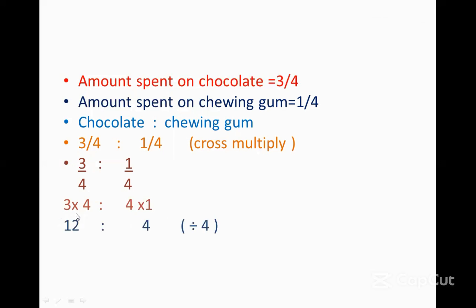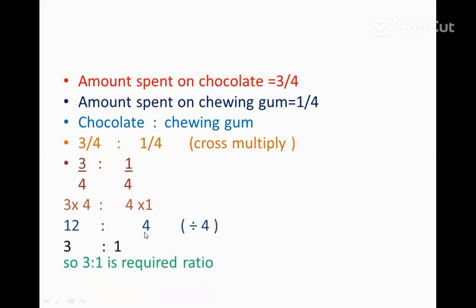Three multiplied by four is equal to 12, and four multiplied by one is equal to 4. Now we are going to reduce it into lowest terms. We will divide by four — when 12 is divided by four it becomes three, and when four is divided by four it becomes one. So the required ratio is 3:1.